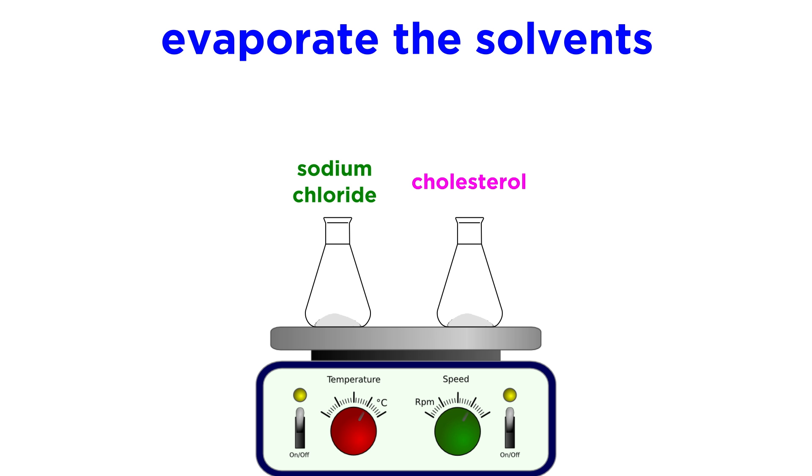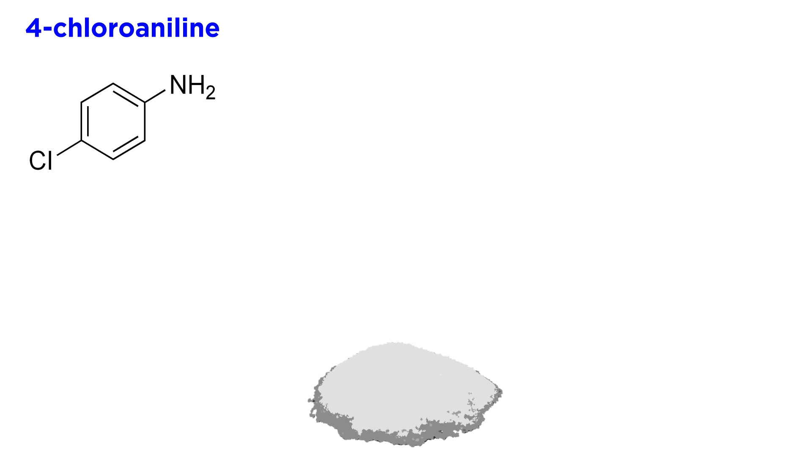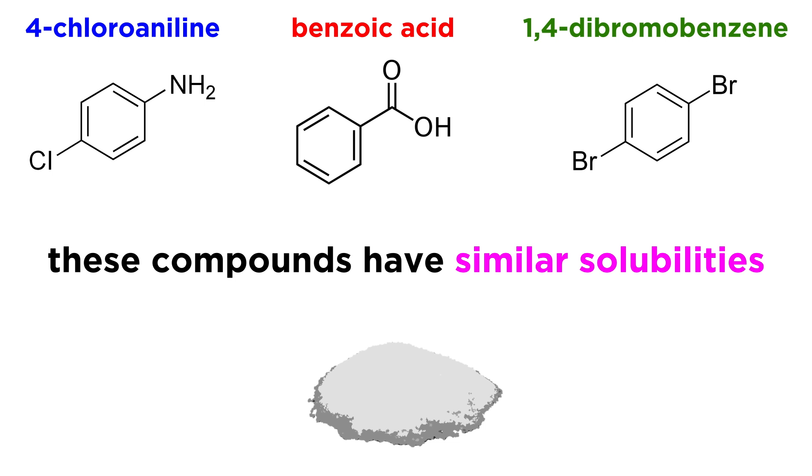That one was pretty easy, because the substances had differing solubilities. Now let's look at a trickier example. Say we have a solid mixture of 4-chloroaniline, benzoic acid, and 1,4-dibromobenzene. These are structurally similar, and therefore have very similar solubilities, so we can't just use two different solvents and expect much to happen. Instead, we have to do some chemistry.